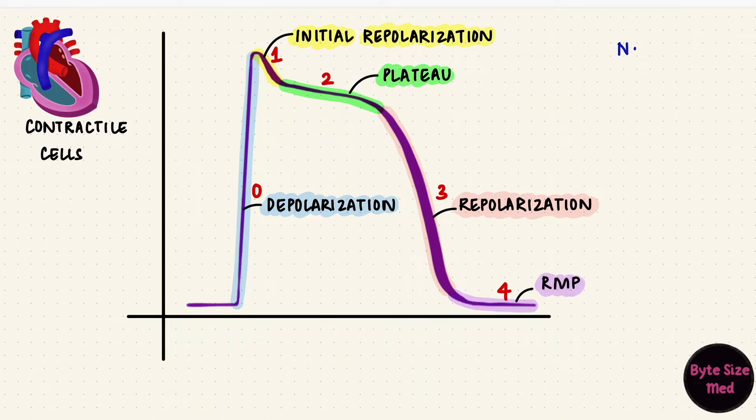There are three important ions that are mostly involved: sodium, calcium, and potassium. The pink is the inside of the cell and the blue is the outside. The resting membrane potential of cardiac muscle is negative at around negative 90 millivolts.